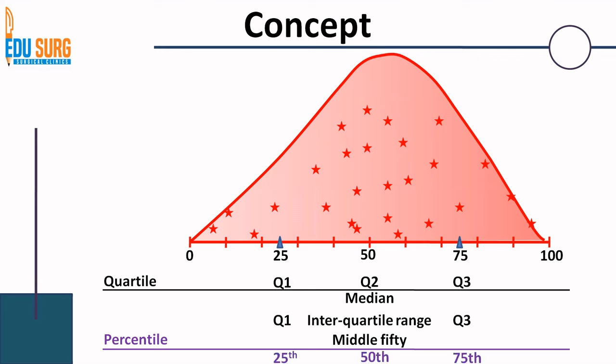If we talk of percentile, it can be 1st percentile, 2nd percentile, 3rd percentile, and so on. In that sense, Q1 becomes the 25th percentile, Q2 becomes the 50th percentile, and Q3 becomes the 75th percentile.